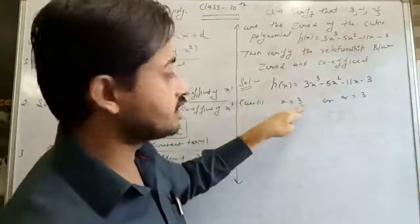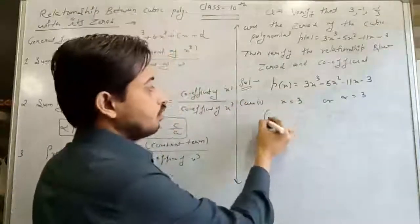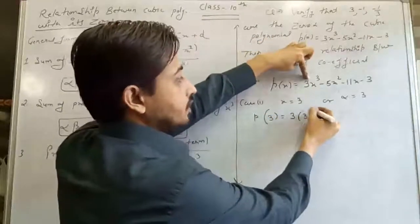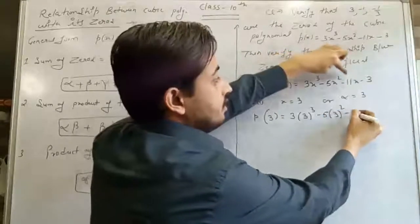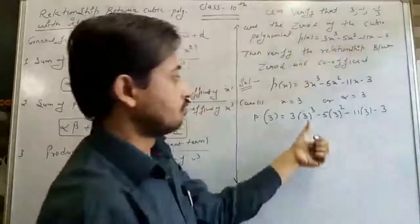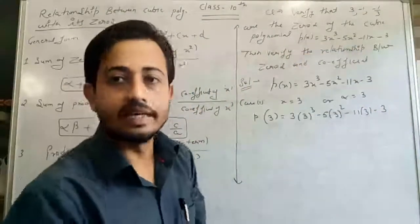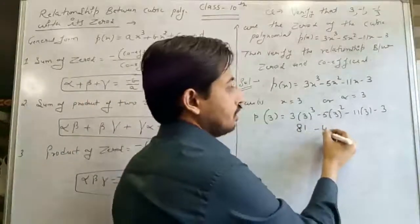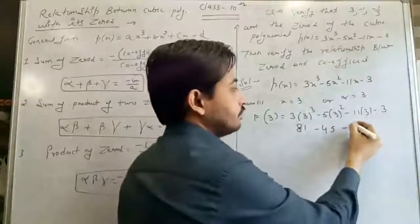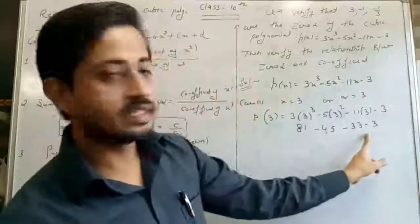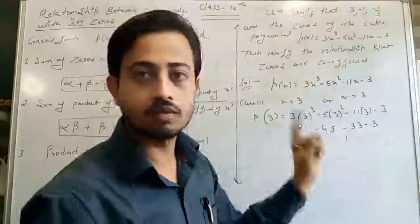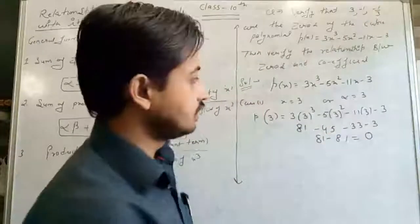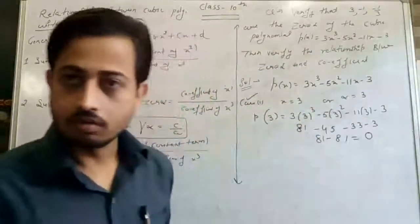Case 2: X = -1 (beta = -1). P(-1) = 3(-1)³ - 5(-1)² - 11(-1) - 3 = -3 - 5 + 11 - 3 = -11 + 11 = 0. So x = -1 is also verified as a zero.